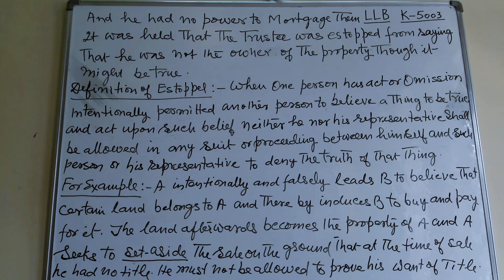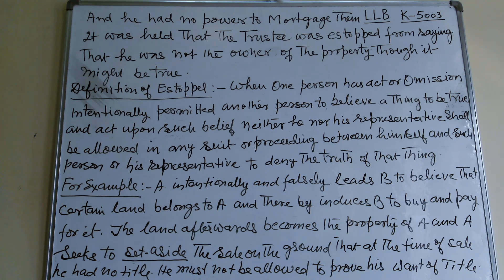Now I want to make it more clear with the help of an example. A intentionally and falsely leads B to believe that certain land belongs to A and thereby induces B to buy and pay for it. The land afterwards becomes the property of A, and A seeks to set aside the sale on the ground that at the time of sale he had no title. He must not be allowed to prove his want of title. This is the definition of Estoppel with the help of example.